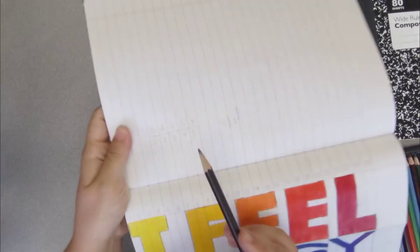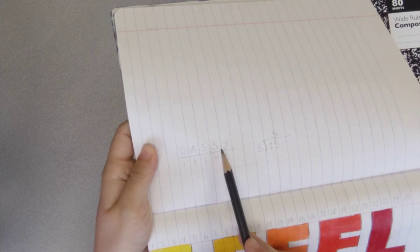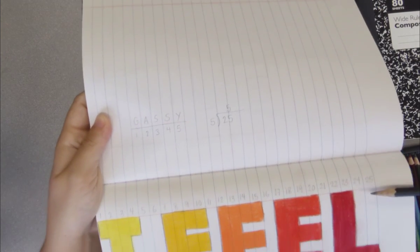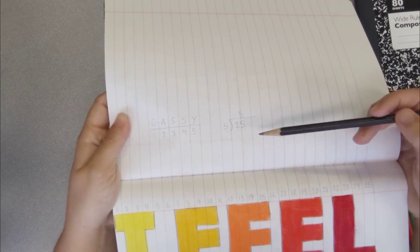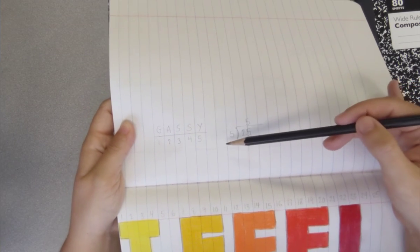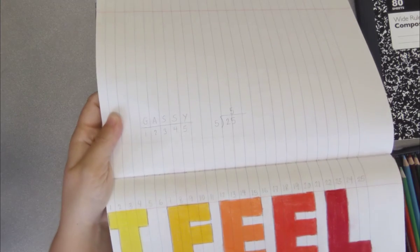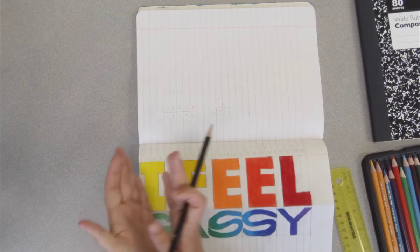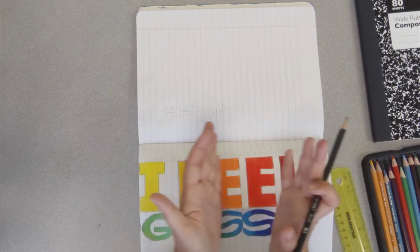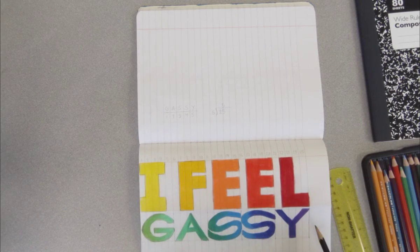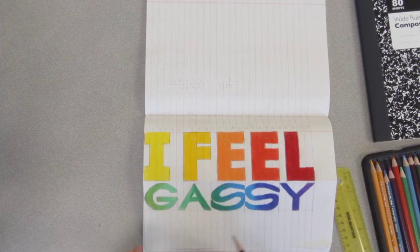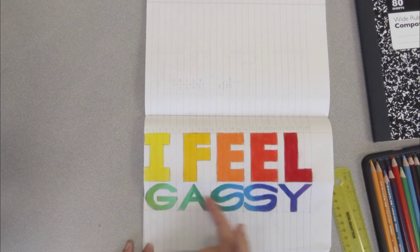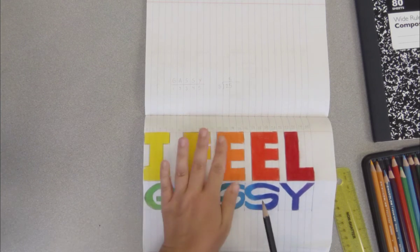So how many columns wide does each of your letters need to be? When I did I feel gassy, gassy has five letters: G, A, S, S, Y. I have 25 lines, so I did a little bit of division: 25 divided by 5 equals 5. So I knew that I had five lines, five columns, for the width of each one of my letters.